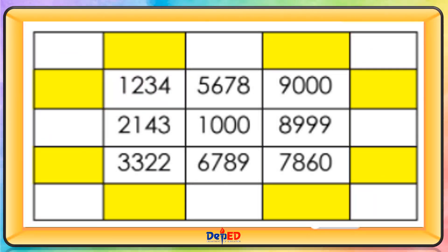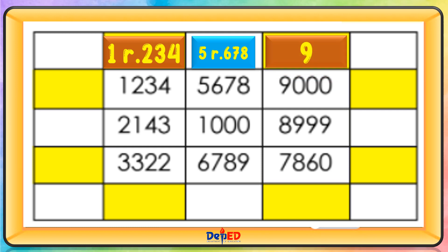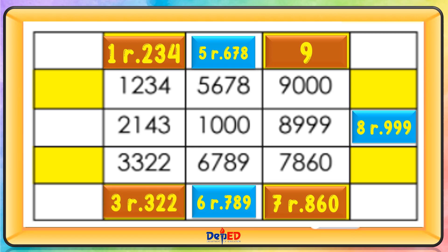1,234 divided by 1,000 equals 1, remainder 234. 5,678 divided by 1,000 equals 5, remainder 678. 9,000 divided by 1,000 equals 9. 899 divided by 1,000 equals 0, remainder 899. 6,789 divided by 1,000 equals 6, remainder 789. 3,322 divided by 1,000 equals 3, remainder 322. And 2,143 divided by 1,000 is 2, remainder 143.